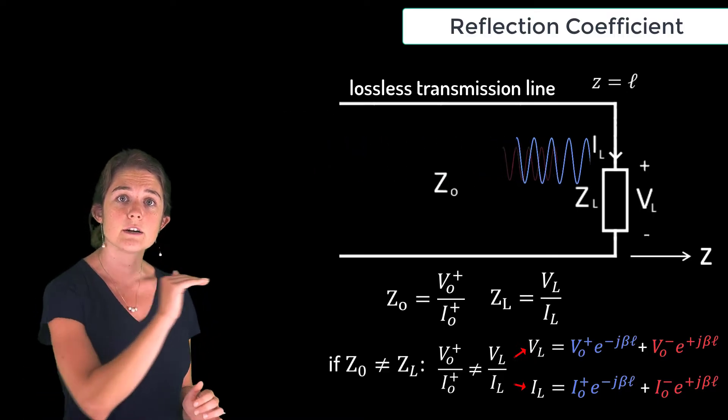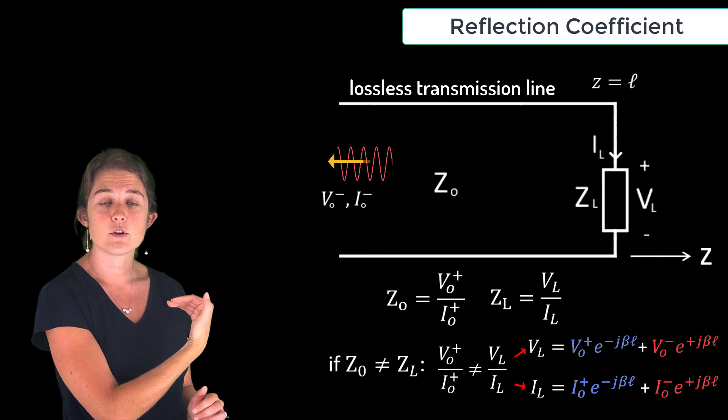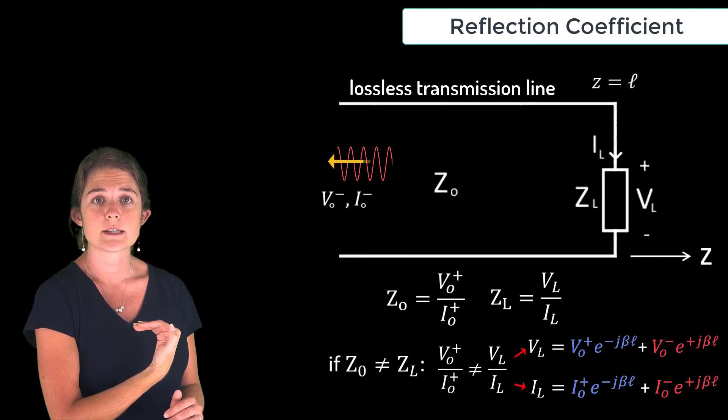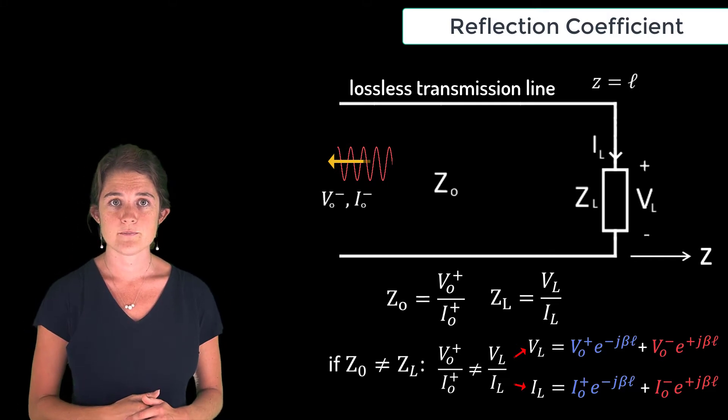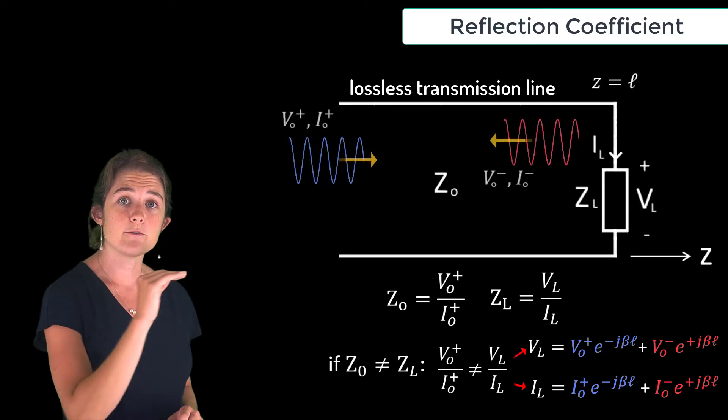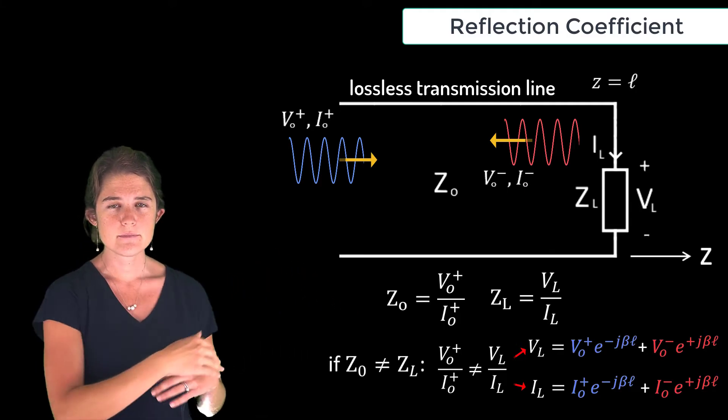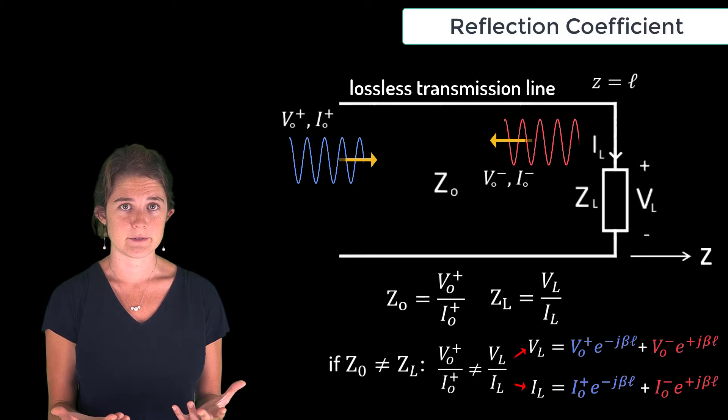The reflected portion of the signal will propagate back toward the source as a backward wave. In the case of a mismatch load, we will have both a forward propagating wave and a backward propagating wave on the line. But how much of the wave will be reflected?